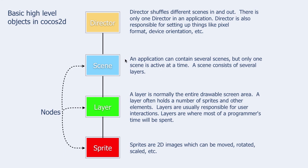Another object is a scene. An application can contain several scenes, but only one scene is active at a time. A scene consists of several layers. A layer is normally the entire drawable screen area, and a layer often holds a number of sprites and other elements. Layers are usually responsible for user interactions and are where most of a programmer's time will be spent.